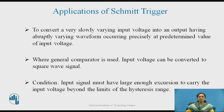A very important thing for the Schmitt Trigger is that the input signal must have enough excursion to carry the input voltage beyond the limits of the hysteresis range. Therefore, you must check what is the amplitude of the input voltage and what are the threshold points VUT and VLT — then and only then can you obtain the hysteresis curve and the transitions in the output voltage.